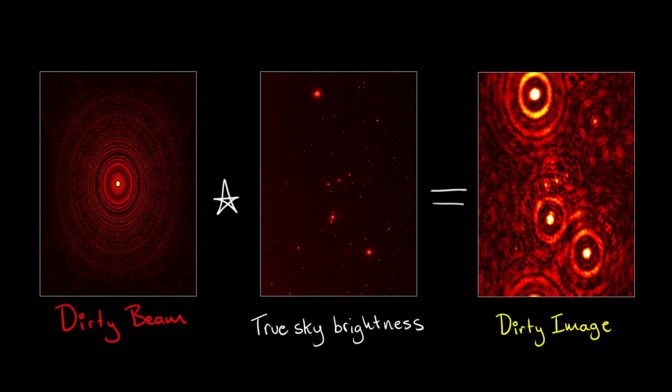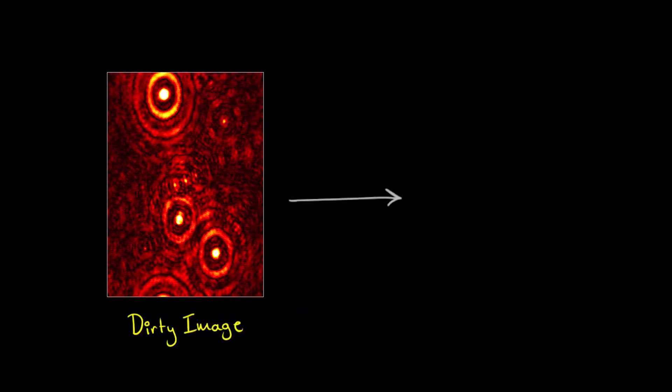As we learned in our video introducing clean, making science images from interferometric data requires deconvolving the point spread function of the array from the initial dirty image. A commonly used algorithm for doing this is called clean.